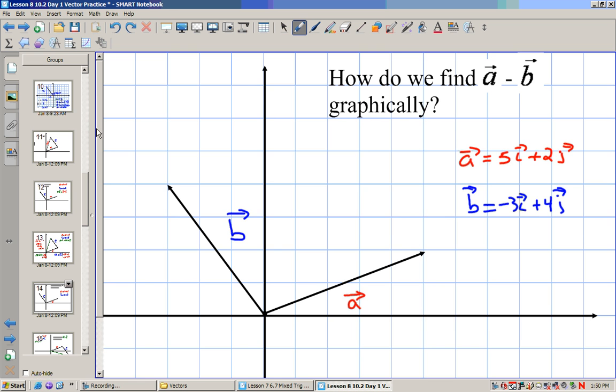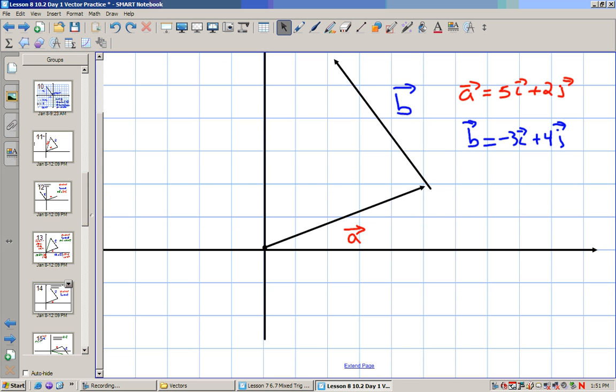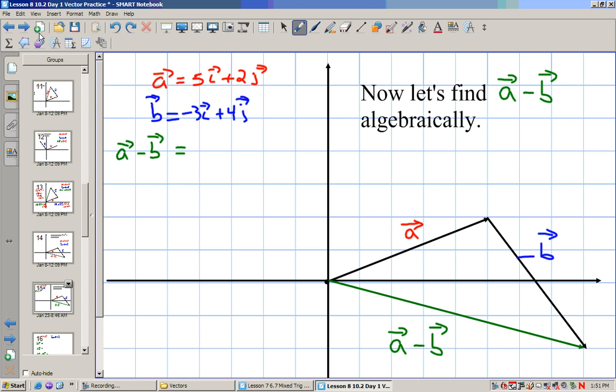Alright, how can we find a minus b graphically? Well, a plus b, we put b at the end of a. A minus b, we just have to flip b around. So it could look like this. So I go from the beginning of a to the end of b. So that's going to be 1, 2, 3, 4, 5, 6, 7, 8. And then negative 2j. You can also get that by doing 5 minus a negative 3, which would be 8. 2 minus 4, which is negative 2j. If you have the components. I already found that algebraically. It's pretty easy. Whenever I say that, I don't think about it. Make the dumbest mistake. 5 minus negative 3 is 8i. 2 minus 4 is negative 2j.